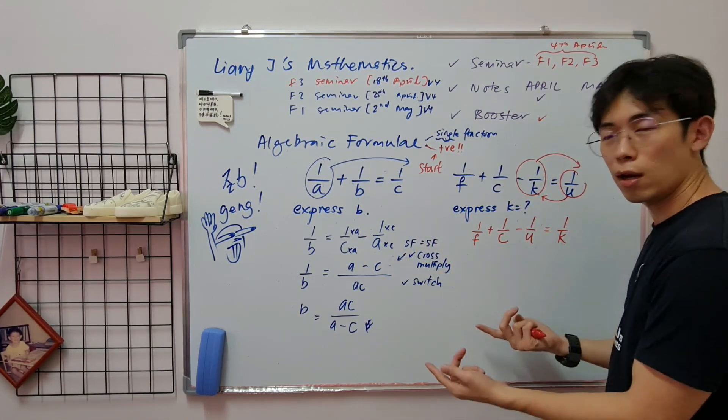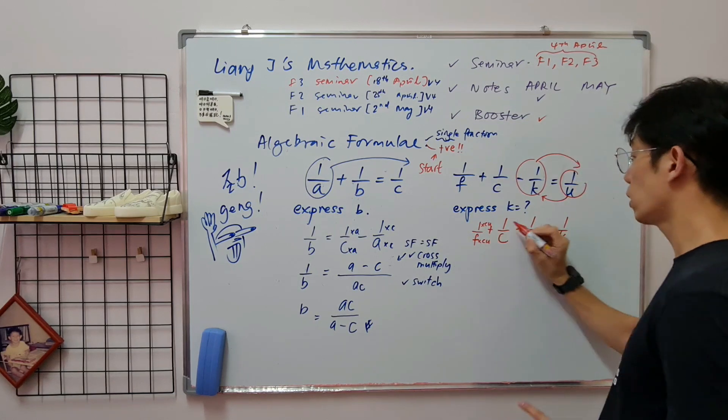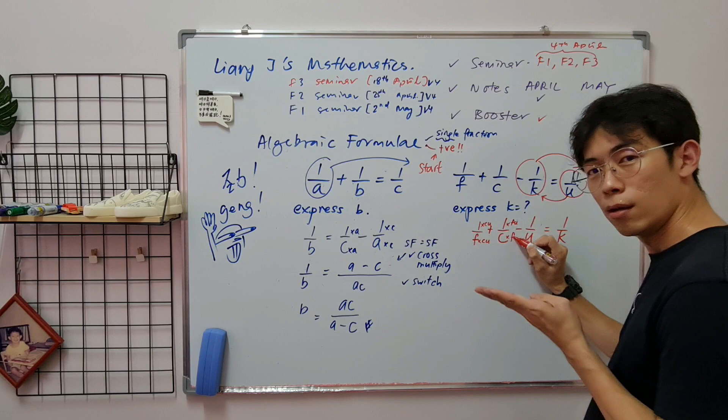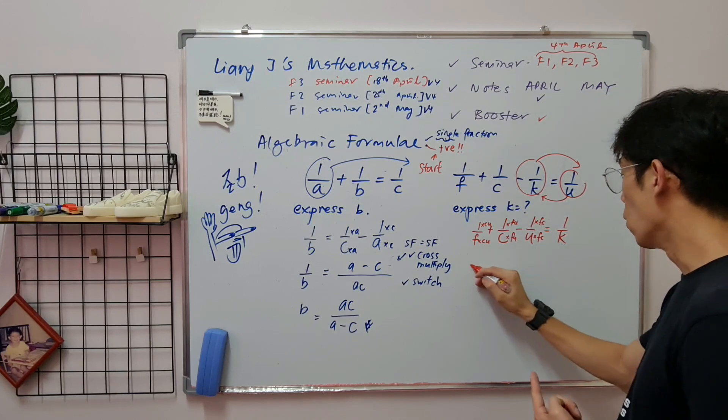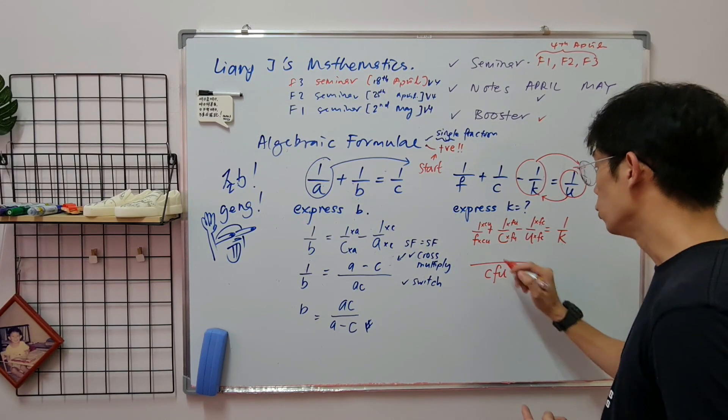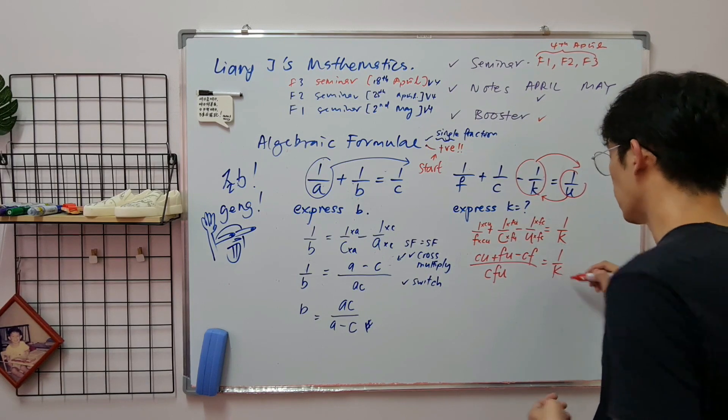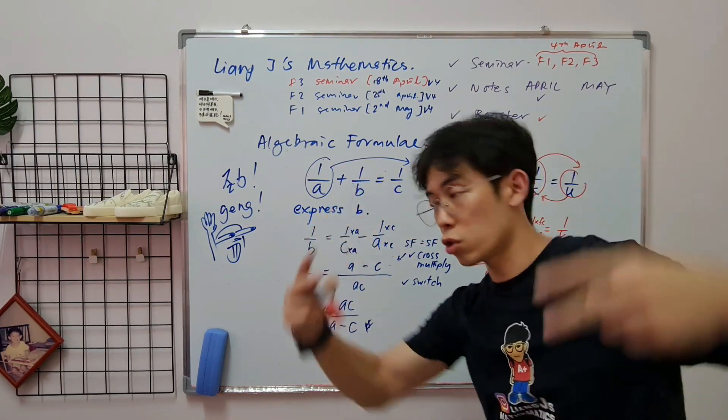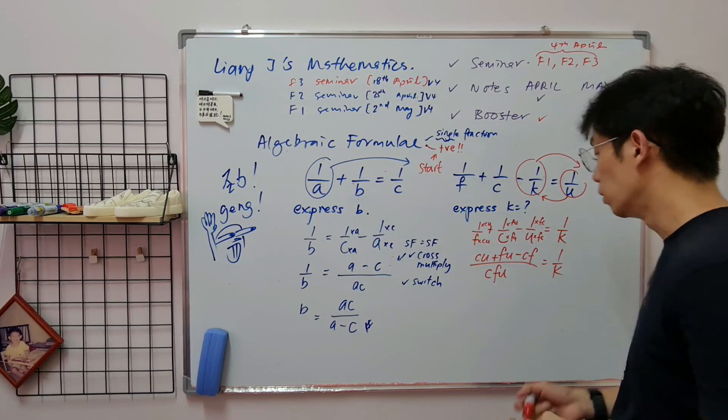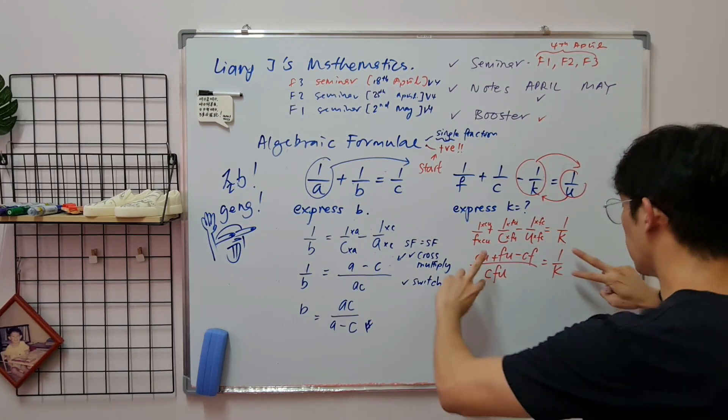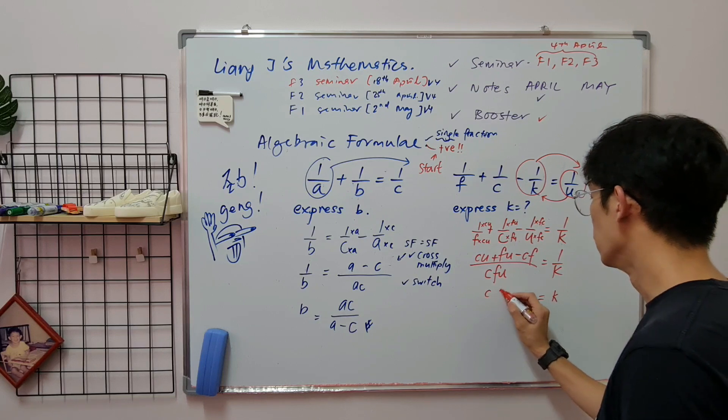Then can you do like instantly switch? No. You gotta make it same denominator. C times U, this one times FC. Same denominator. So over CFU. This one CU plus, minus CF, equals to 1 over K. Single fraction, single fraction. Switch. You wanna do cross multiply, can, it's just that you'll have extra workings that might confuse you. So switch, faster. Before I switch, I'm going to tell yourself, this one I switch up and down. So you get K over 1, equals to CFU over CU plus.